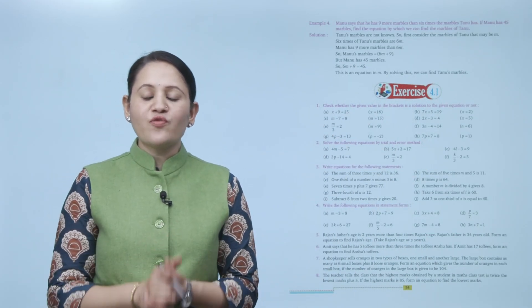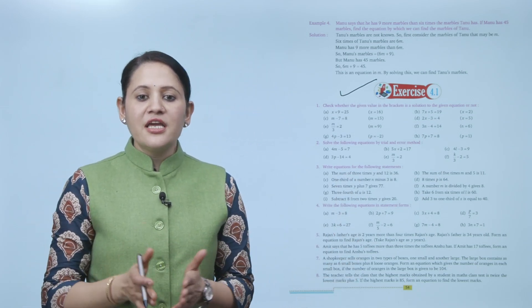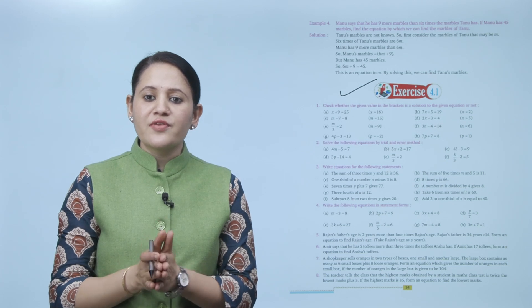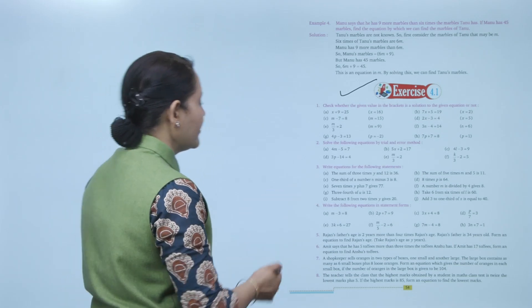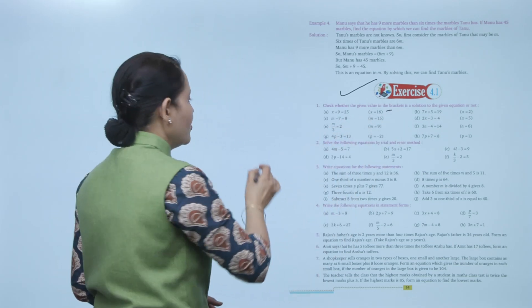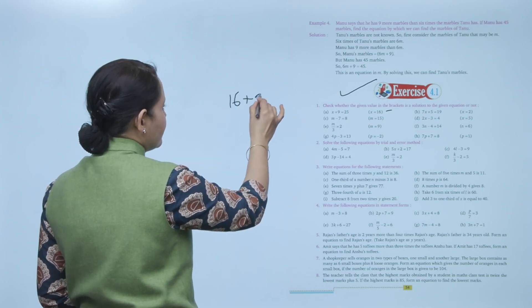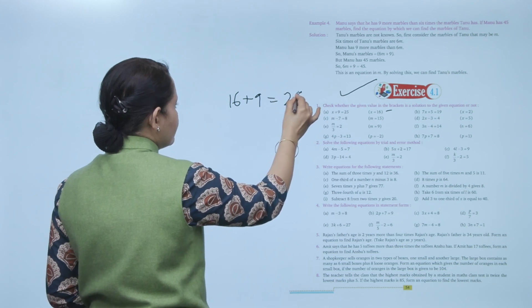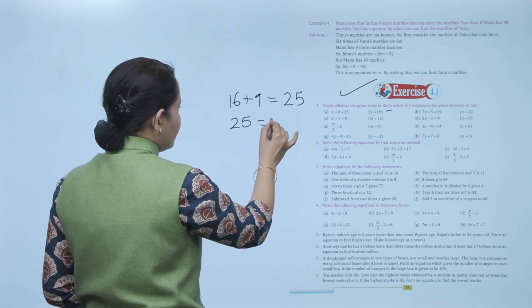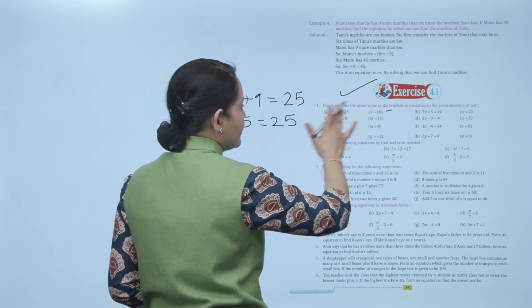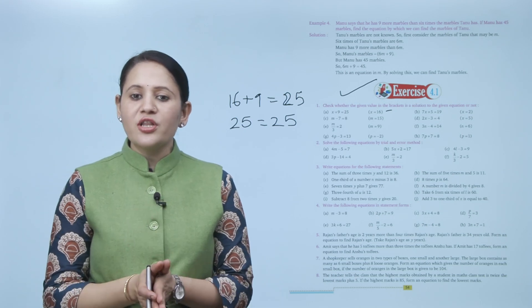Next is Exercise 4.1: check whether the given value in the bracket is the solution for the given equation or not. First: x plus 9 equals 25, where x is given as 16. We will put the value of x, so 16 plus 9 equals 25. LHS equals RHS, which means x equals 16 is the solution of the equation. Practice all the questions of this exercise.